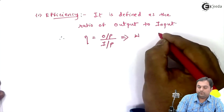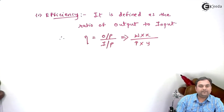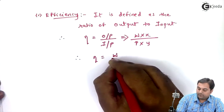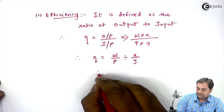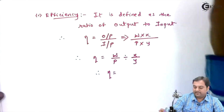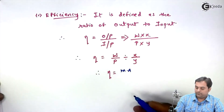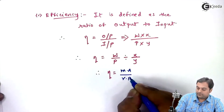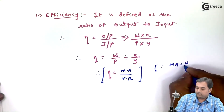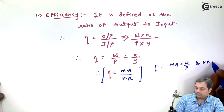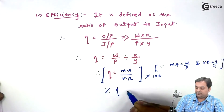Since output equals W into X and input equals P into Y, efficiency becomes W upon P divided by X by Y. We know that W upon P is mechanical advantage, and Y by X is velocity ratio, so X by Y is one upon velocity ratio. Therefore, efficiency equals mechanical advantage divided by velocity ratio. Multiplying by 100 gives percentage efficiency for any given machine.